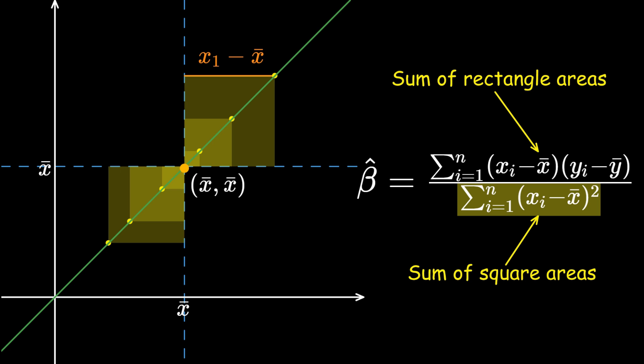Indeed, we see that beta hat is given by the ratio between the sum of rectangle areas and the sum of square areas. Isn't that cool?